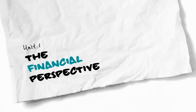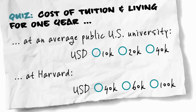Sebastian is going to talk about the financial perspective. The question is: why is there such high demand? Why do so many online courses spring up? Since this is a lecture, we're going to quiz you. What do you estimate is the cost of tuition and living for one year at an average U.S. university? It's actually only $20,000 if you go to a public U.S. university.